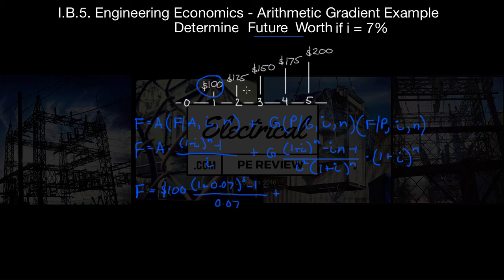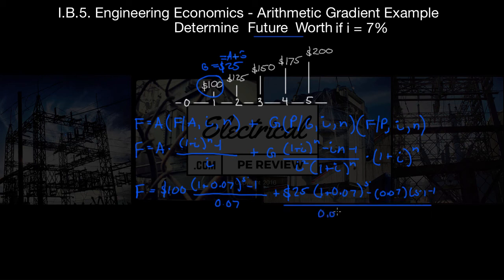Now we have plus G, and we know that this 125 is going to equal A plus G. We know A is 100, so we know G is 25. So we have 25 times 1 plus 0.07 to the 5 minus 0.07 times 5 minus 1 over i squared, 0.07 squared, times 1 plus i, 0.07 to the n, which is 5.